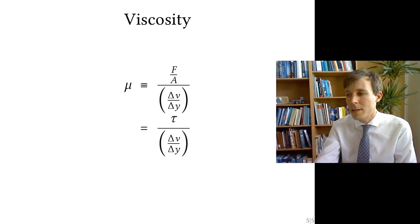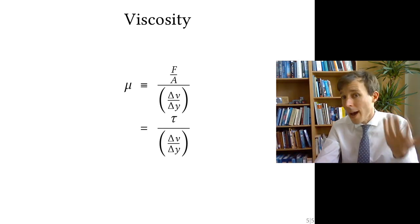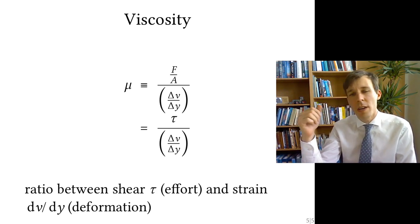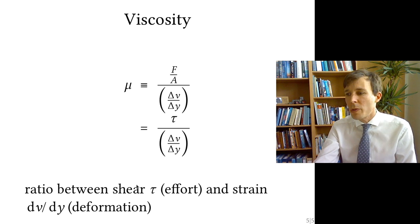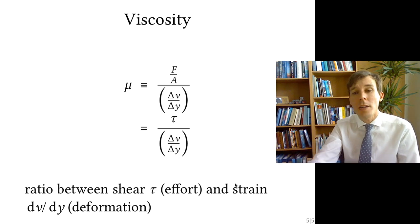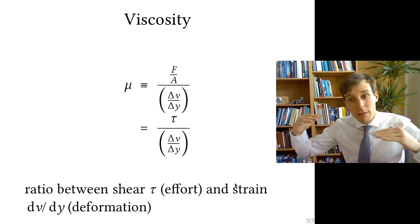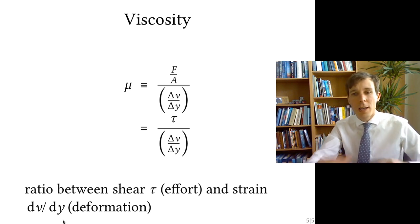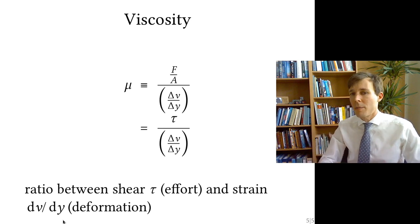So I hope now it makes a little sense when people say it's the ratio between shear and strain. It's the ratio between shear, which is tau here, the effort that you apply, and the strain, how easily the thing will deform, how quickly the thing will deform, which is delta v over delta y, or more formally, dv dy here. It's the deformation rate in time that you get.